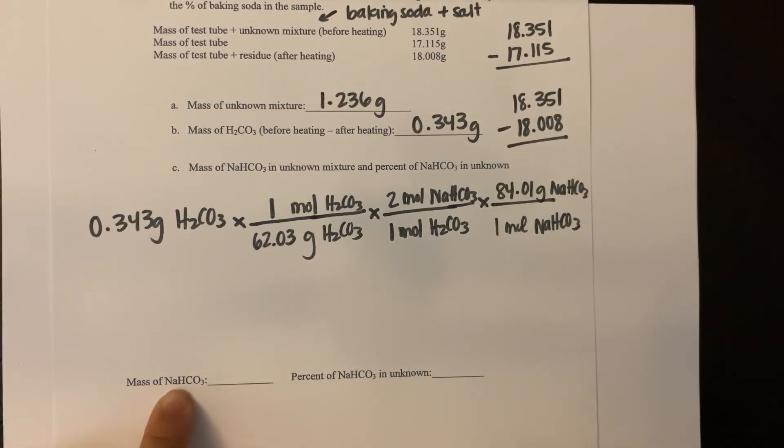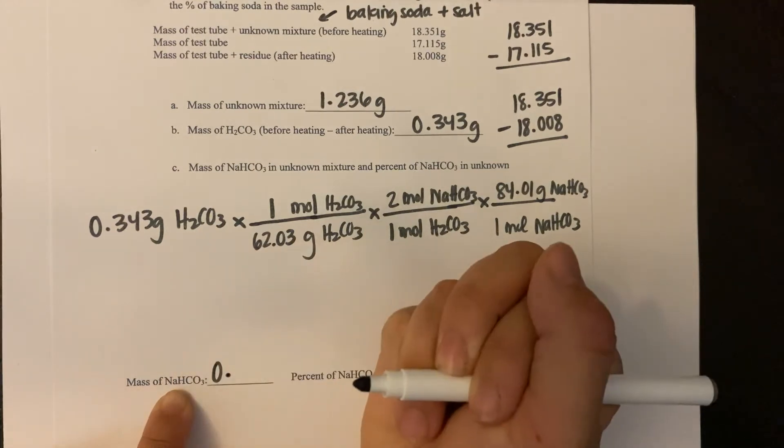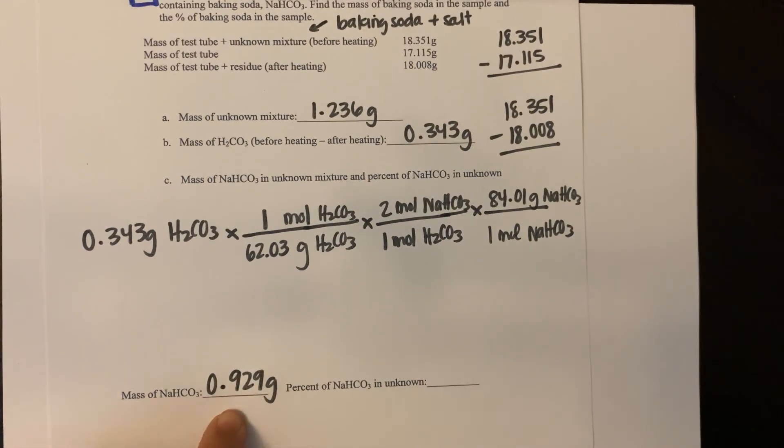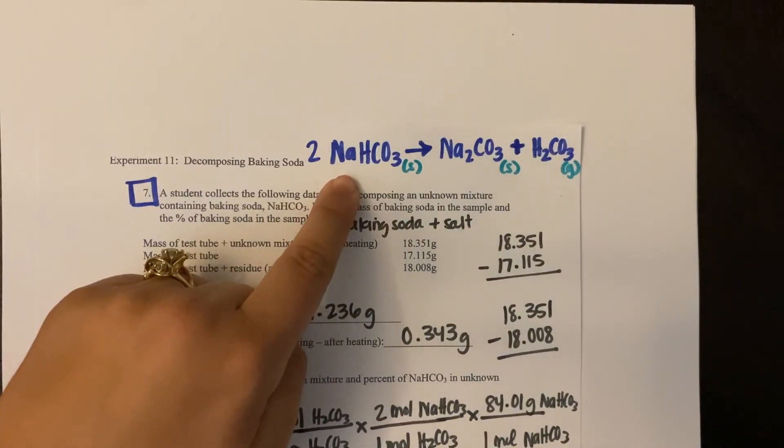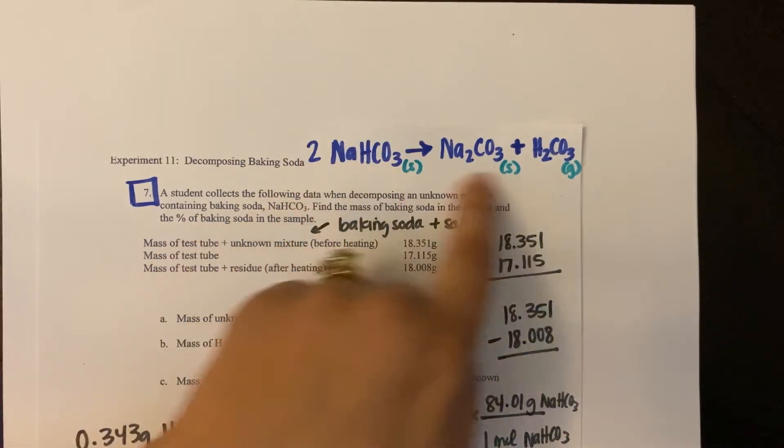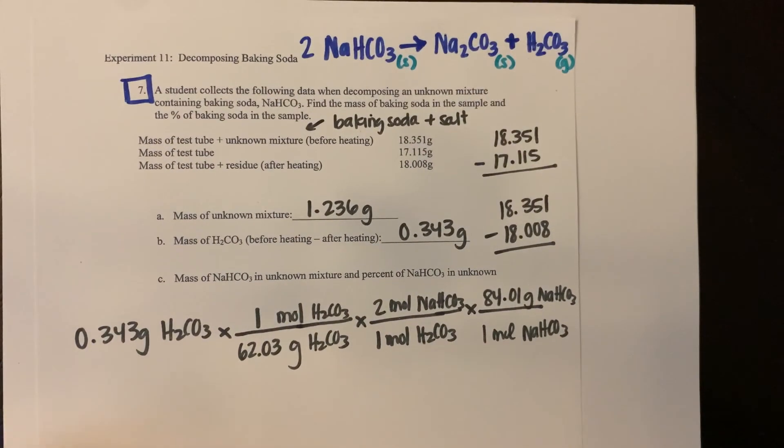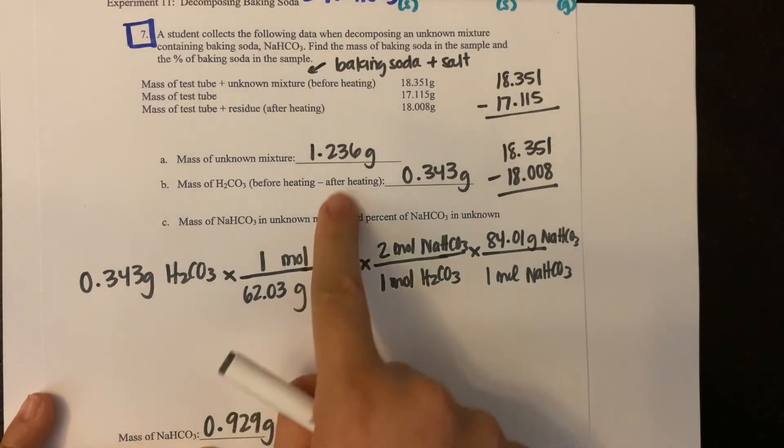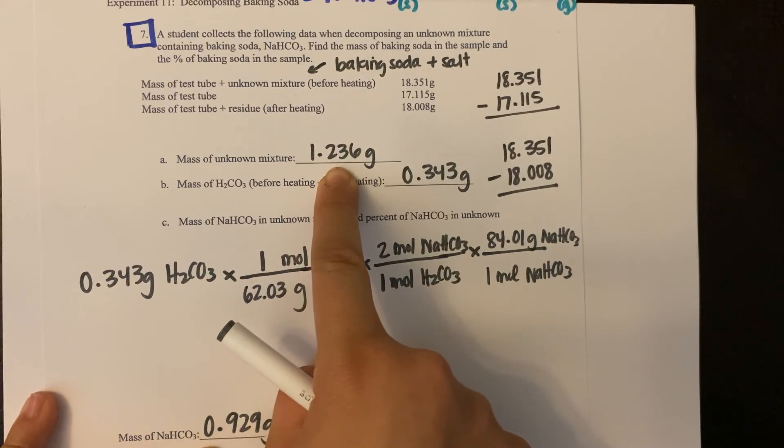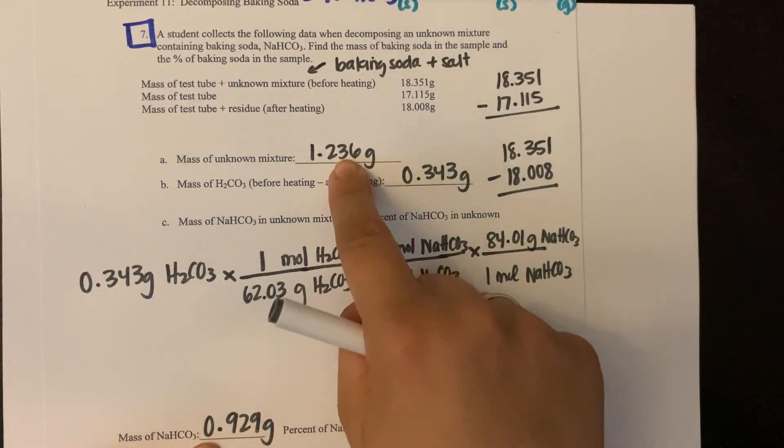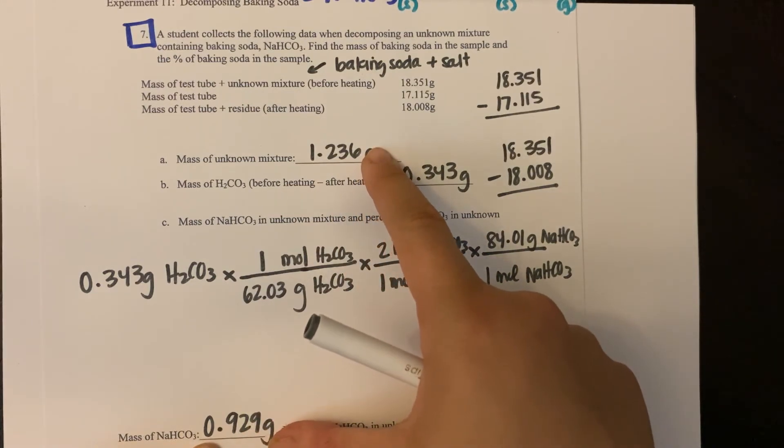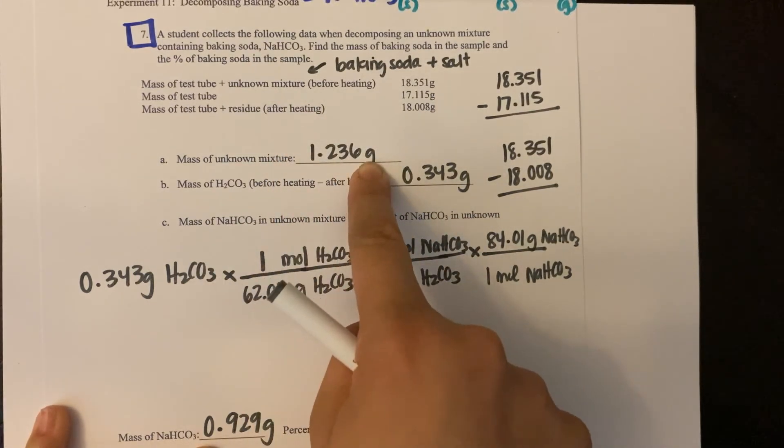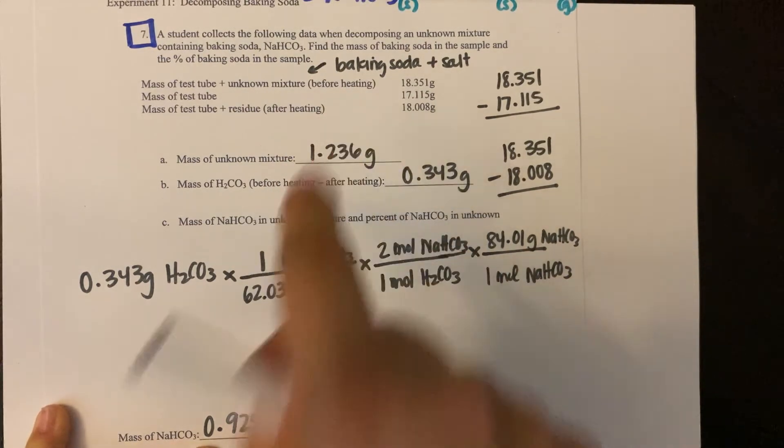The mass of your sodium bicarbonate should be 0.929 grams. So this is the mass of my sodium bicarbonate that reacted. However, this 0.929 is not the same number as the 1.236 that I started with. Why? Why isn't this exactly 1.236? That's because the difference is going to be the amount of salt in this unknown mixture. So 0.929 grams of this 1.236 is sodium bicarbonate. The rest of it is salt.